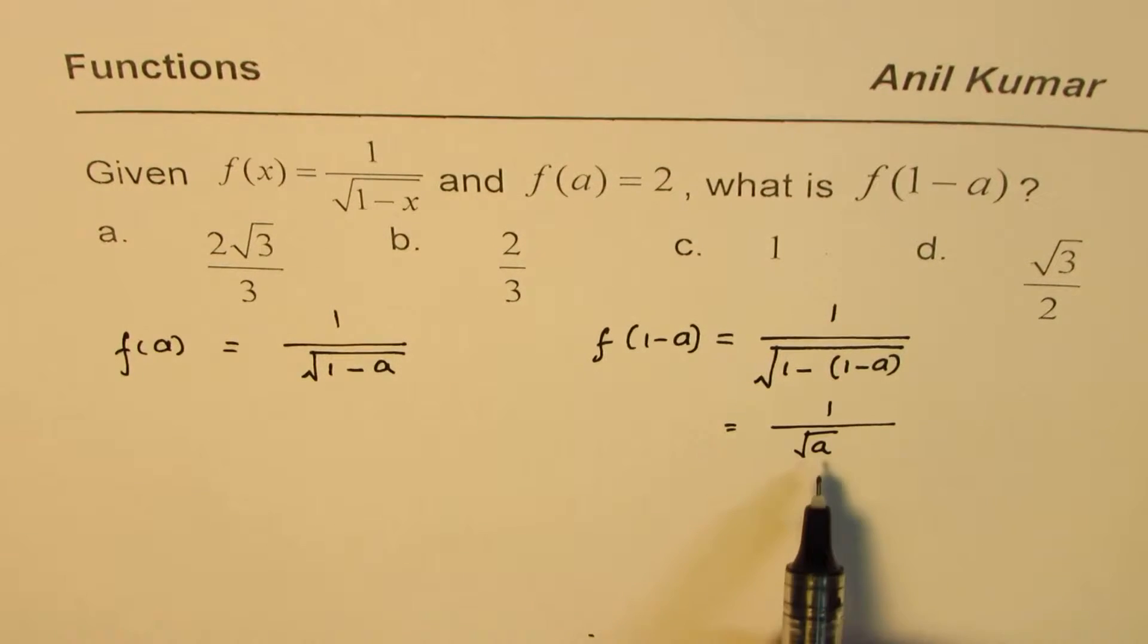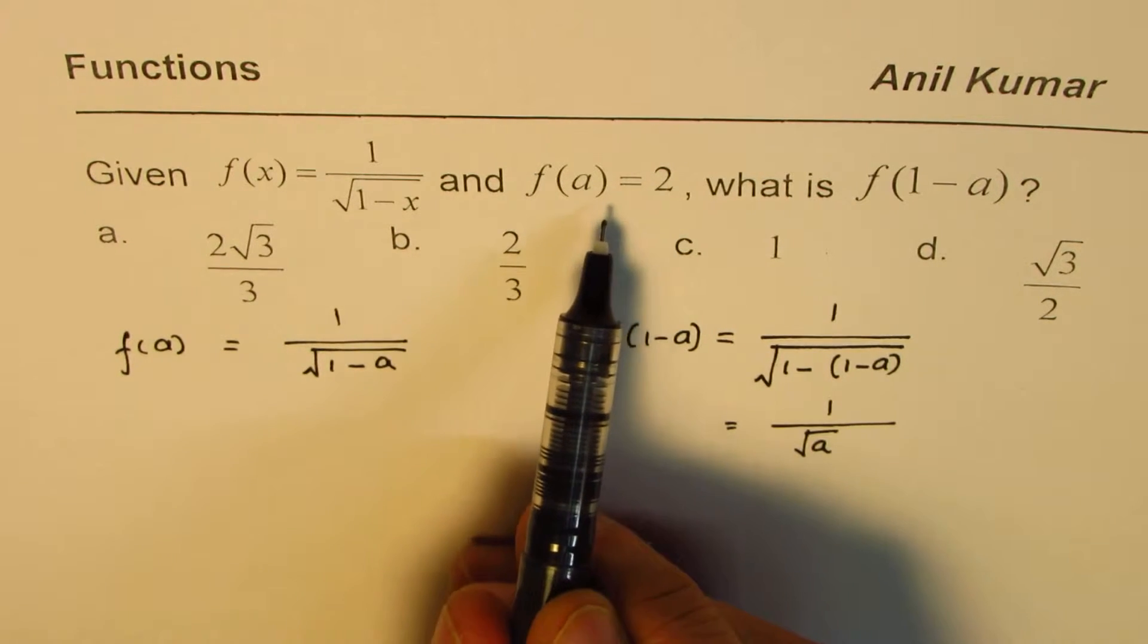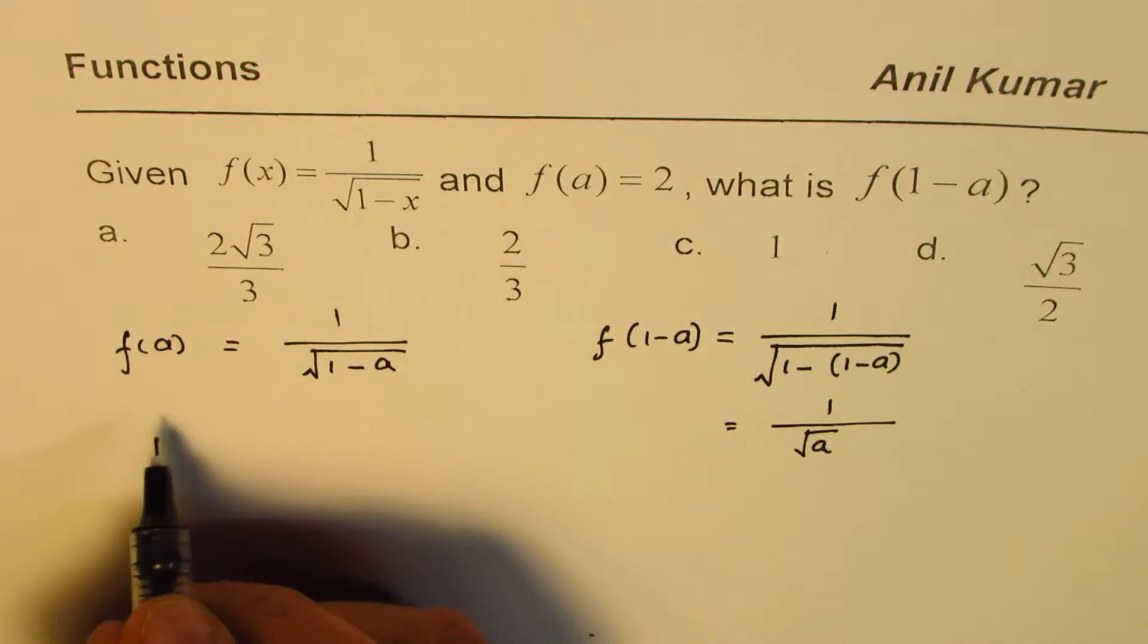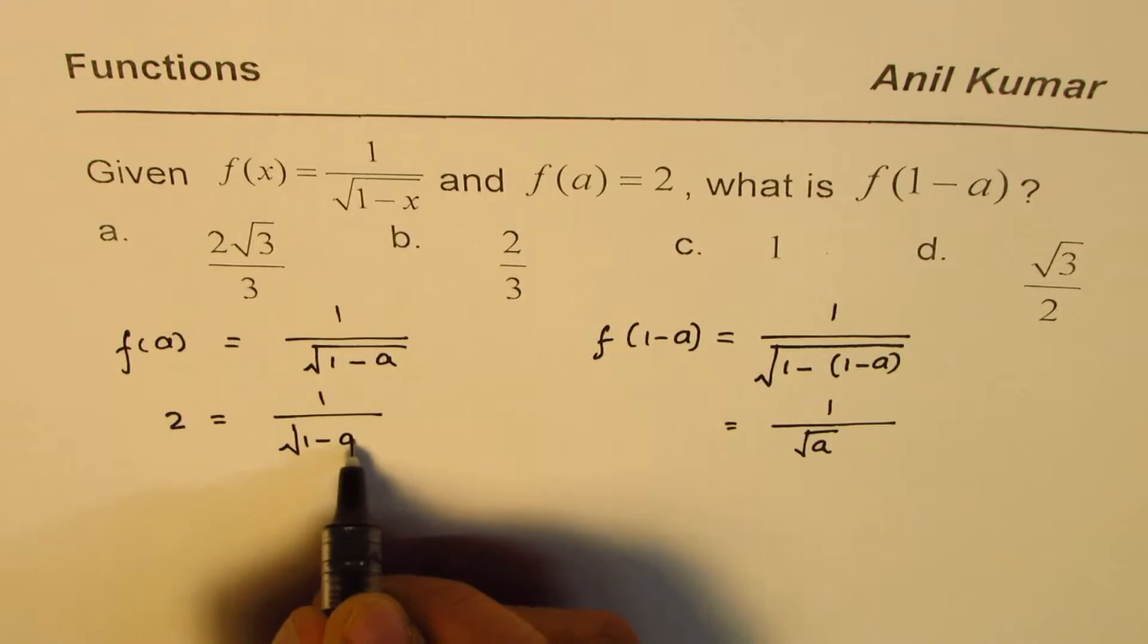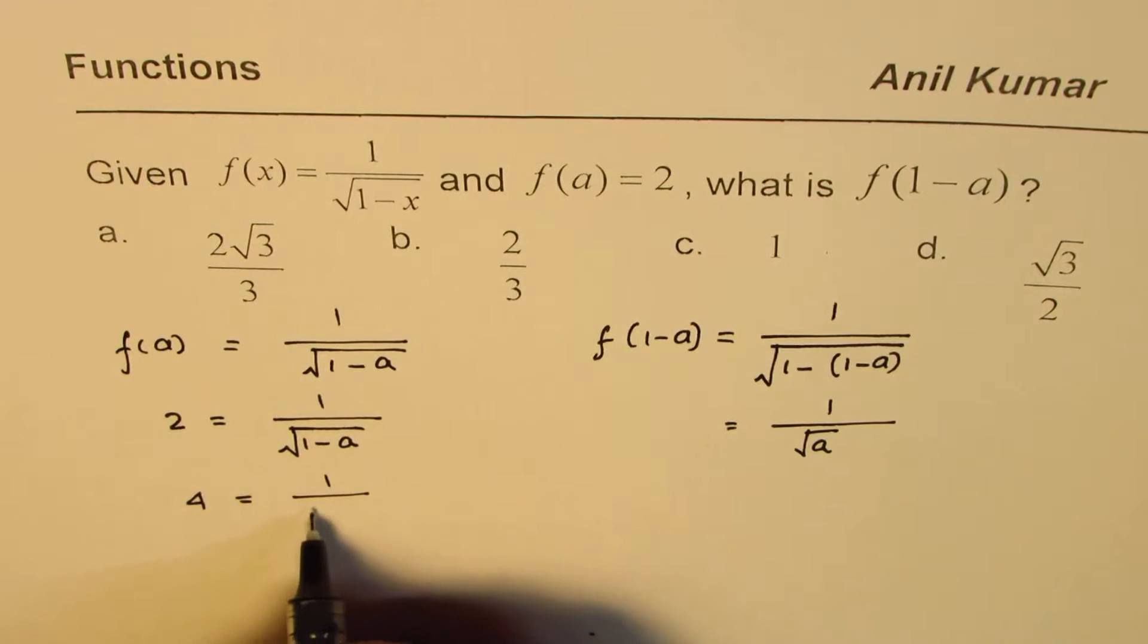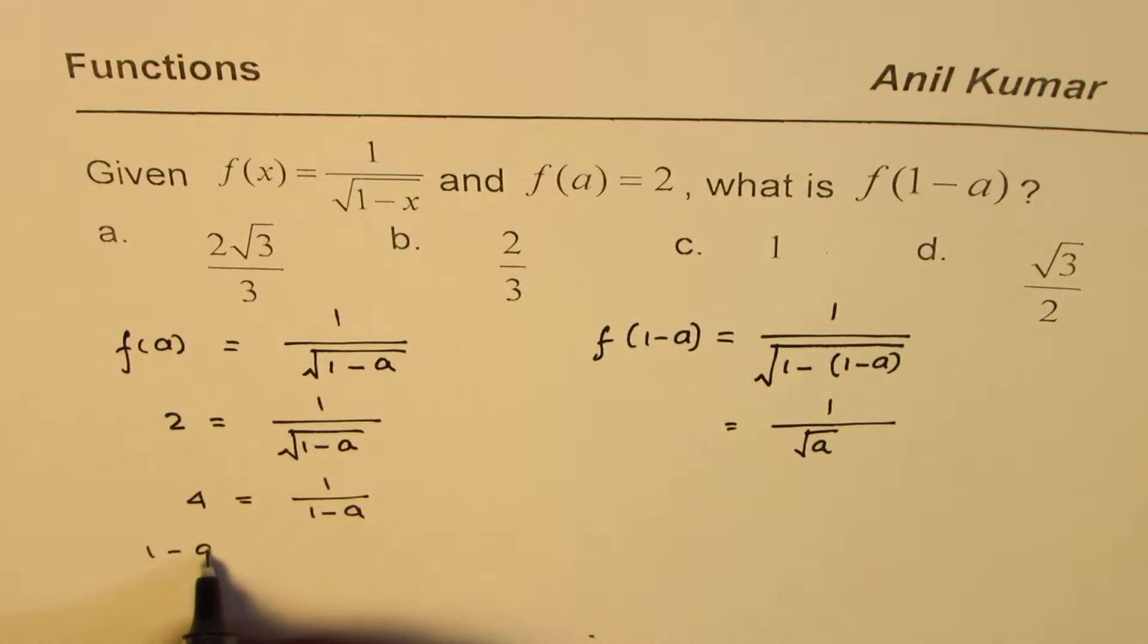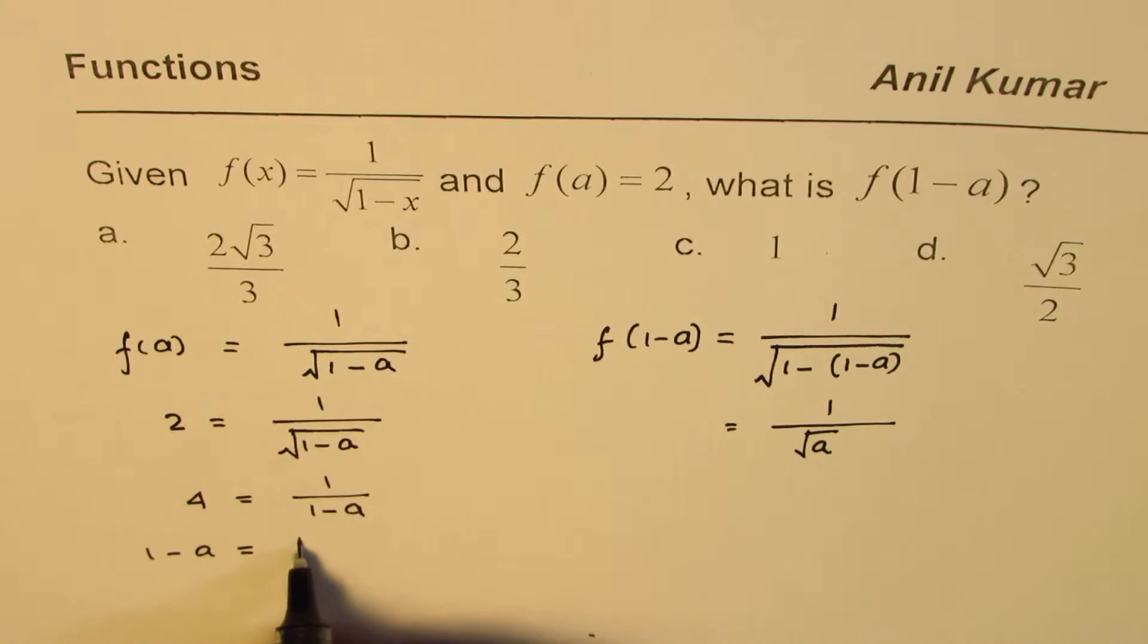So, basically, we need to find the value of a, which we can from the given condition. So, f of a is 2. If I replace f of a with 2, I get 2 equals to 1 over square root of 1 minus a. And now, I can square both sides. So, I get 4 equals to 1 over 1 minus a. If I cross multiply, I get 1 minus a equals to 1 over 4.